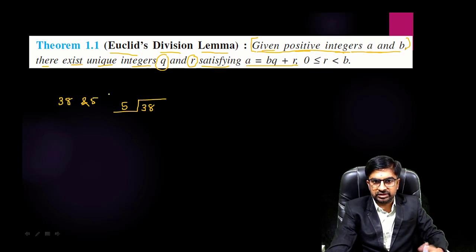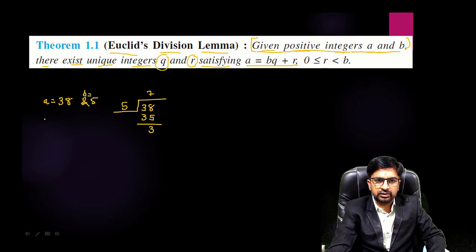These two other integers we will get by dividing: 5 sevens are 35 and the remainder is 3. So from these two, this is your a, this is your b, we are getting two other integers q that is 7 and remainder is 3.